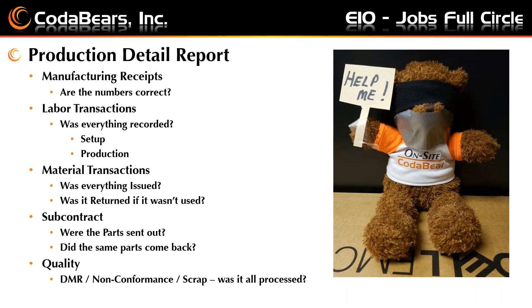Was setup tracked? Was production tracked? Was everything put in before the receipt for manufacturing or shipment to customer? Material transactions — if I estimated we needed five sheets of material, did we issue five sheets to the job? Was it returned? I've seen clients where they issued 20,000 pounds of steel to the job, but they only used 15,000. The other 5,000 never came off the machine and went back into inventory, so they ended up over-costing the materials put into the job.